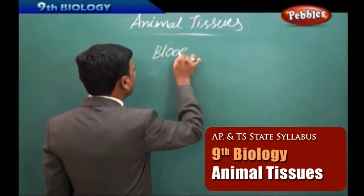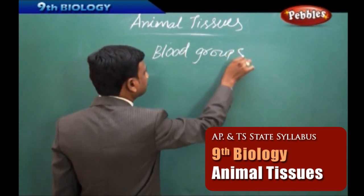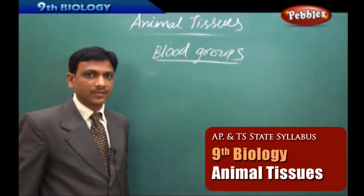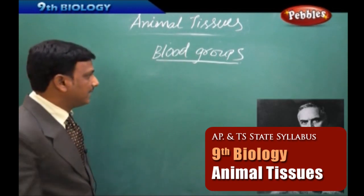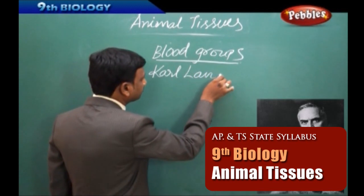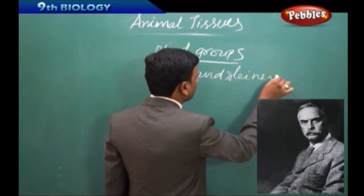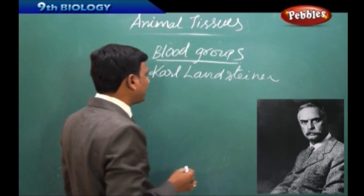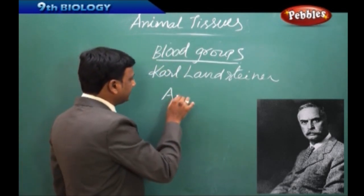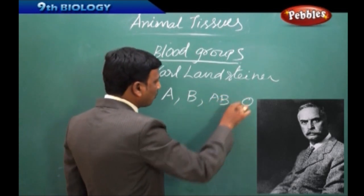Now we are going to discuss about blood groups. A German doctor named Karl Landsteiner classified human blood into four groups: A, B, AB, and O.